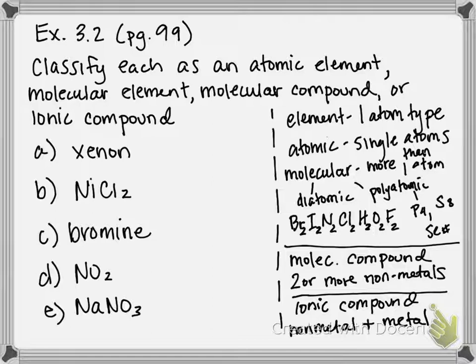So, xenon, look at our periodic table, it's a noble gas. It's not one of our diatomic elements. It's not one of our polyatomic elements, therefore it is categorized as an atomic element. I'm going to shorten element so I don't run out of room. So xenon, it's not part of Brinkelhoff, it's not diatomic, it's not polyatomic, so therefore it defaults to an atomic element, meaning in nature it's a single xenon atom.